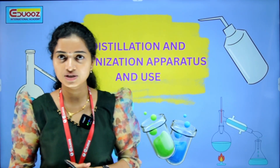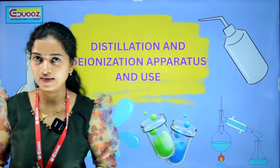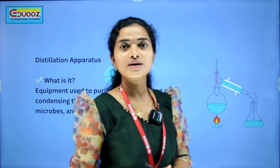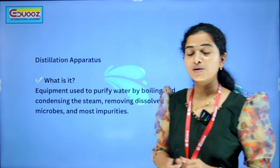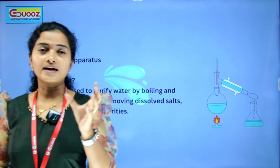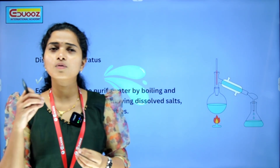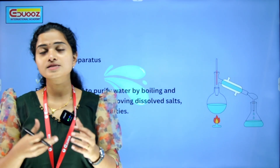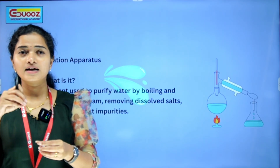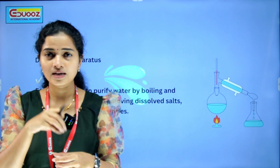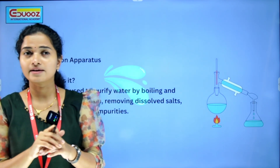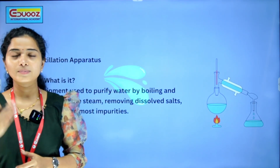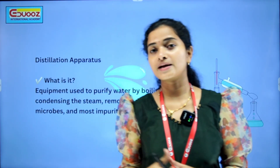So, what are we going to do? Distillation and deionization — apparatus and uses. What is distillation? We are talking about water — we say it is pure, but there are some impurities. Sometimes alkaline or chemical substances. These chemicals are not going to be visible. They are not visible. So we say it is a distillation process.